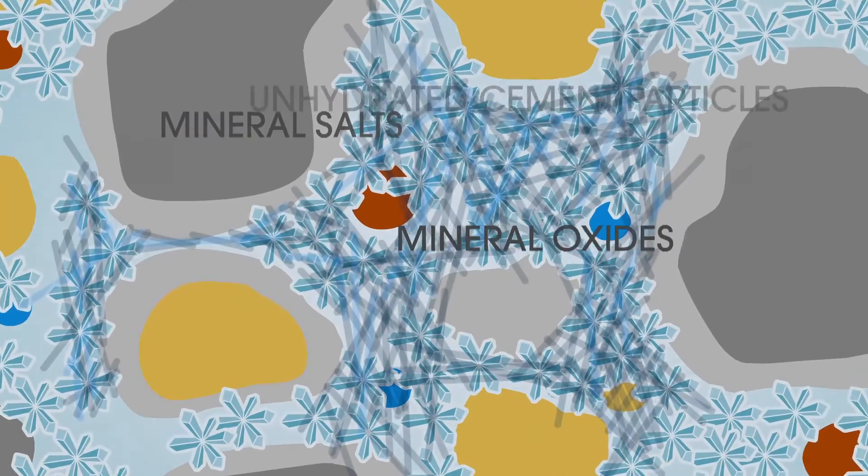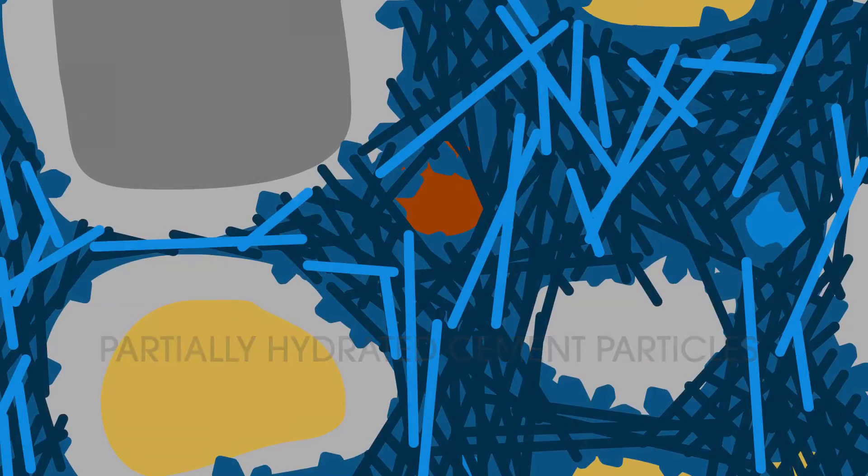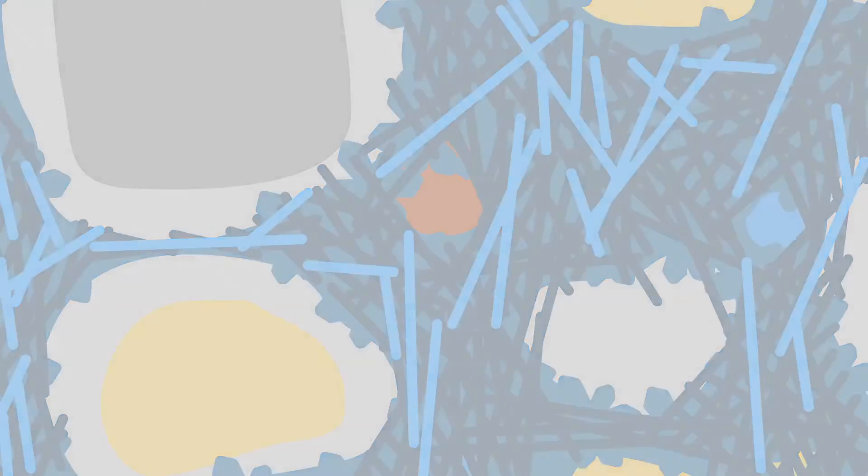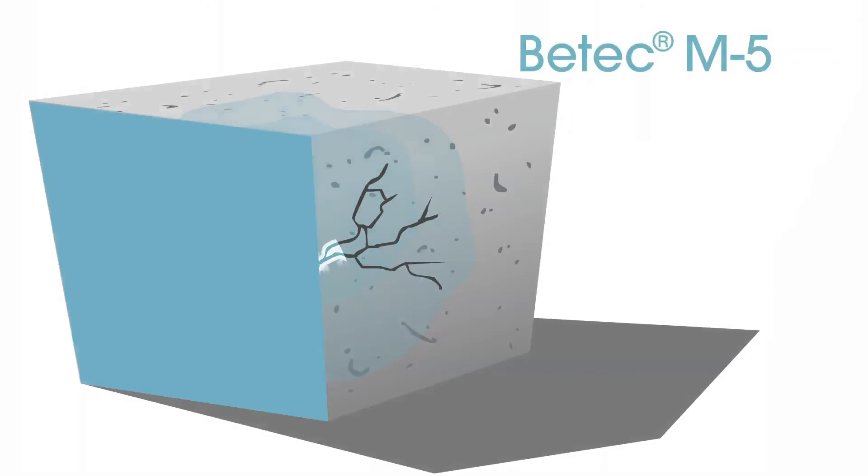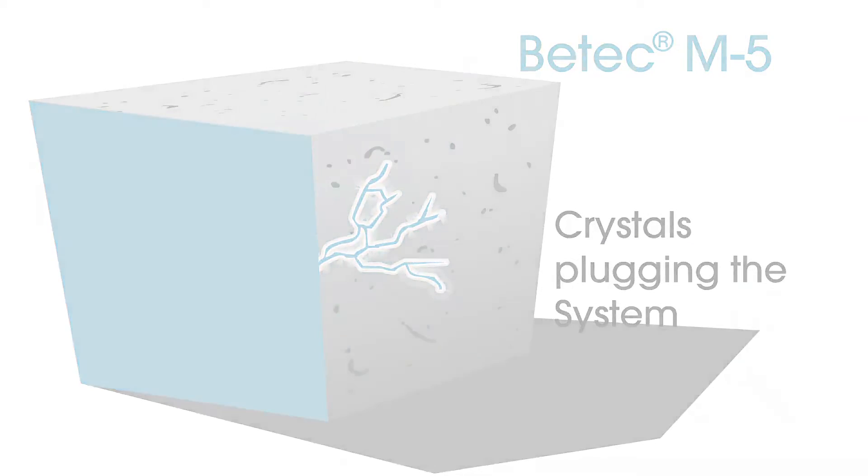The result is the formation of insoluble crystals inside the pore and capillary tract system which blocks off these channels so water from any direction cannot enter and travel through them.